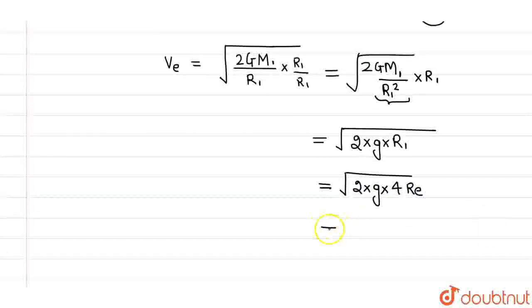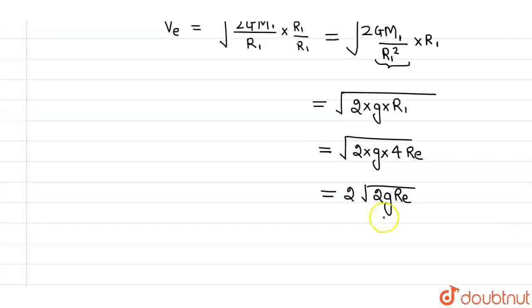Now further, this can be written as 2 times root 2gRe. And we know that root 2gRe is nothing but escape velocity for Earth.